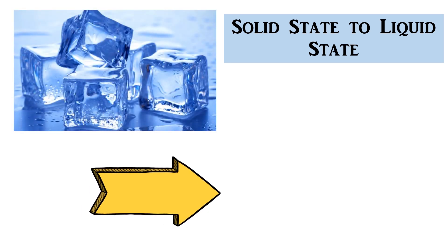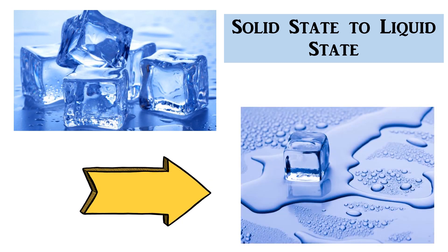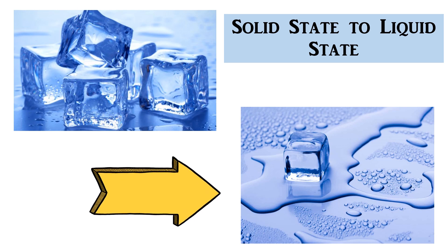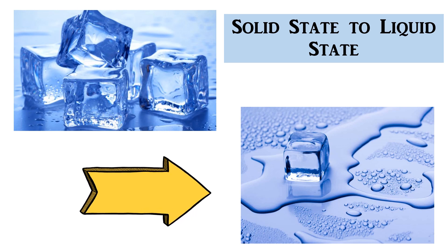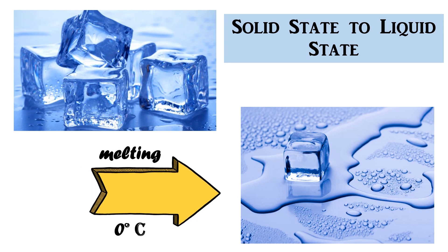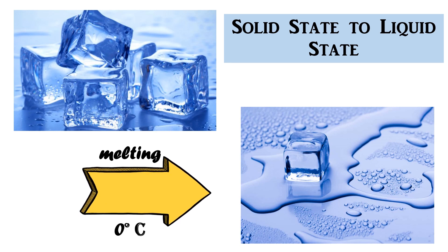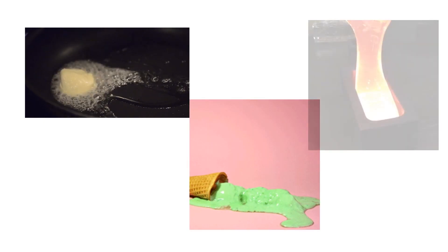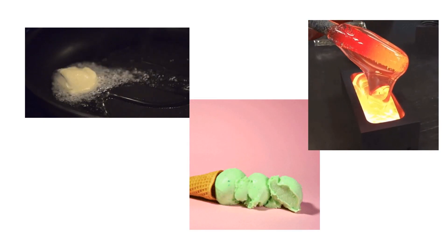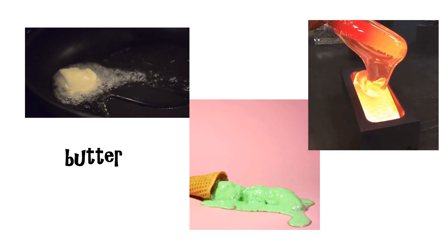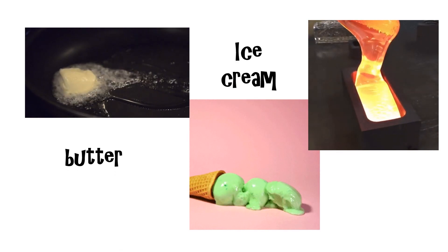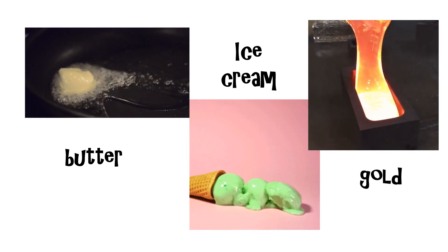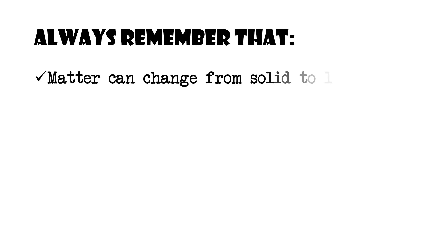When a solid is heated, its temperature increases until it changes to a liquid. We say the solid melts when it changes to a liquid. Ice melts at zero degrees Celsius. This temperature is known as the melting point of ice. Besides ice cubes, there are many other things that melt too — melted butter, melted ice cream, melted gold. Always remember that matter can change from solid to liquid state.